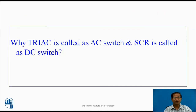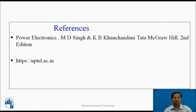Triac is called an AC switch and SCR is called a DC switch because Triac conducts in both half cycles, whereas SCR conducts only in the positive half cycle. These are the references. Thank you.